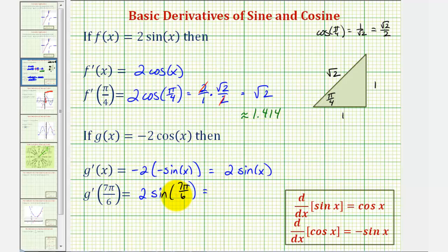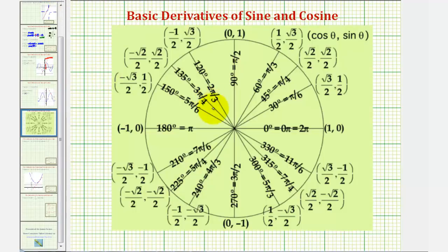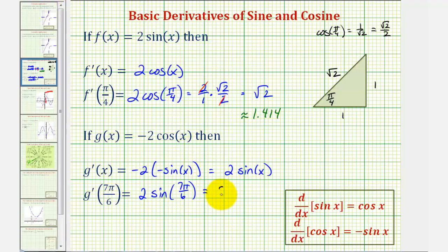Let's go ahead and use a unit circle to determine this function value. Here's the terminal side of the angle seven pi over six radians. Remember, sine theta is equal to y on the unit circle. So sine of seven pi over six is equal to negative one-half. We'd have two times negative one-half, which simplifies nicely to just negative one.